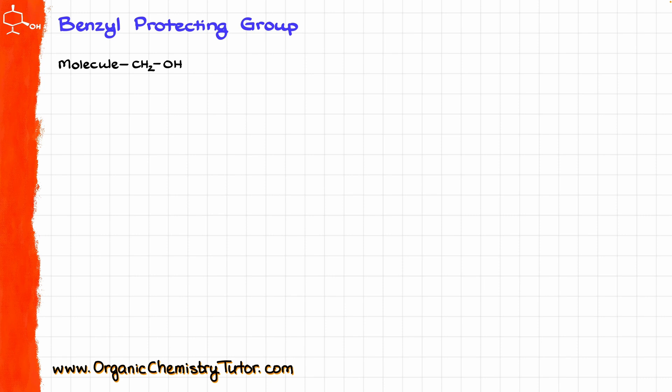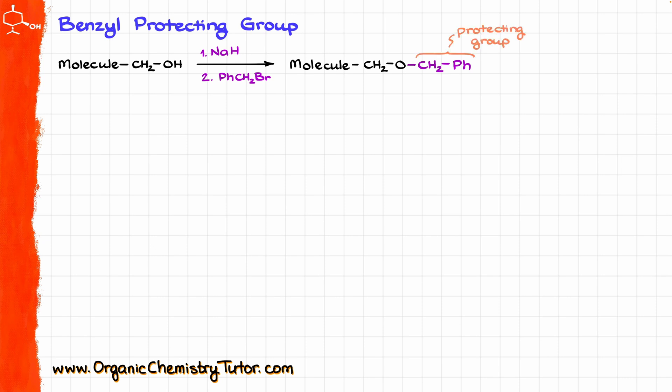So if we have some sort of a molecule with an alcohol, we can treat that molecule with sodium hydride to deprotonate our alcohol and then treat it with benzyl bromide, giving us the benzyl ether over here — which is essentially a very good protecting group for alcohols. This protecting group is very resilient towards both basic and acidic conditions.